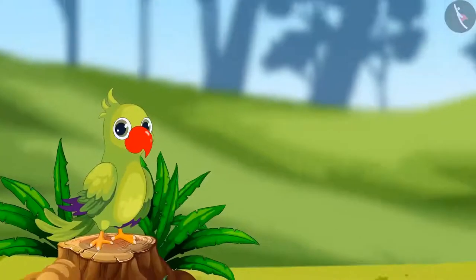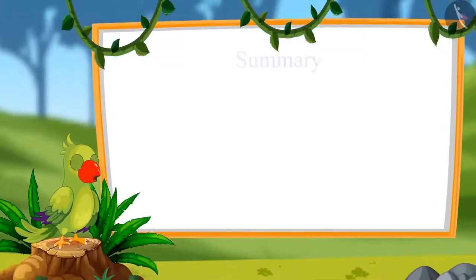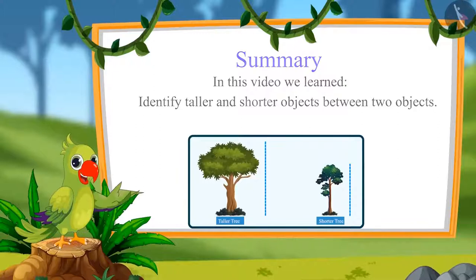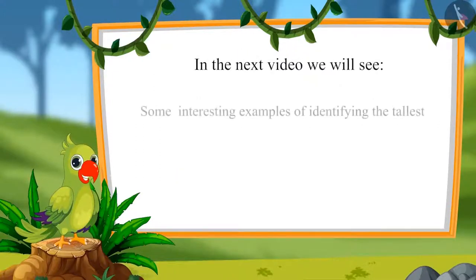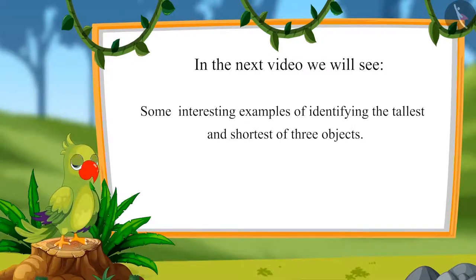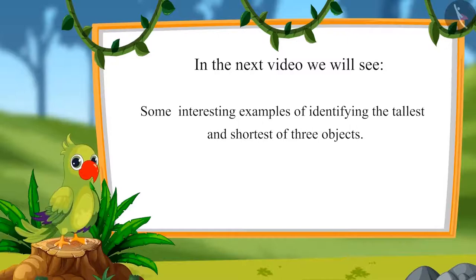So children, I hope that you enjoyed identifying and comparing taller and shorter objects. Now you can identify the tall and short objects around you and compare them to tell which one is taller and which one is shorter. That's all for today children. In this video, we learned to identify taller and shorter objects between two objects. In the next video, we will see some interesting examples of identifying the tallest and shortest of three objects. Till then, bye children.